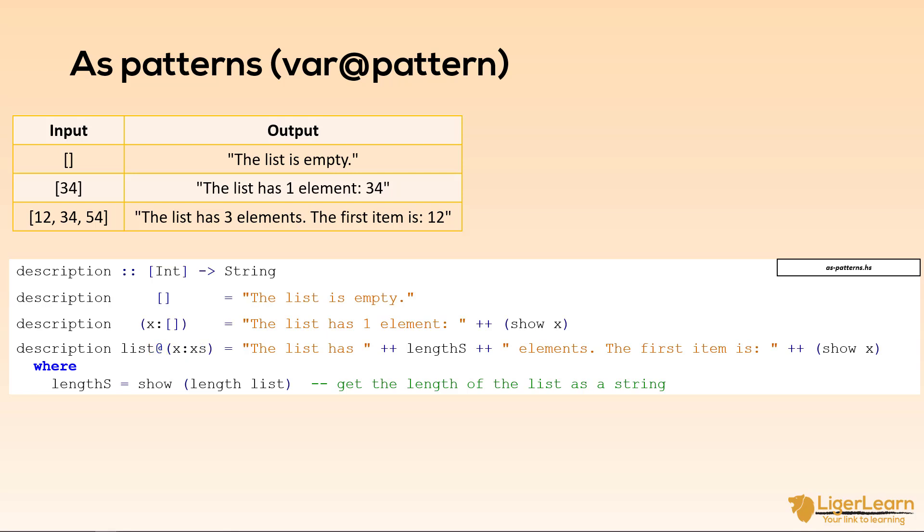So the list variable name here refers to the whole list. I could have called it anything but I just called it list for simplicity. And the x cons x's refers to the destructured first item of the list cons the rest of the list. Now within our function body we can use the list, x, and x's bindings and that is what we do to get the desired string result.